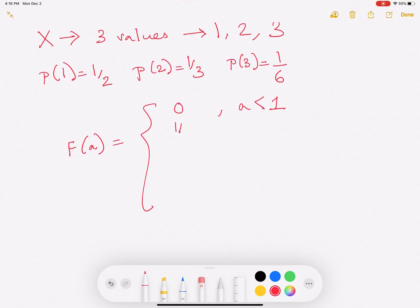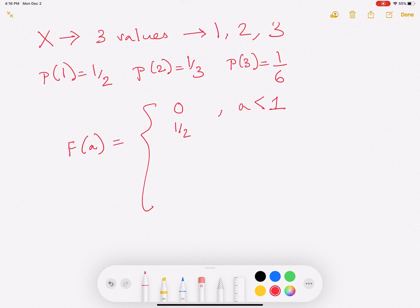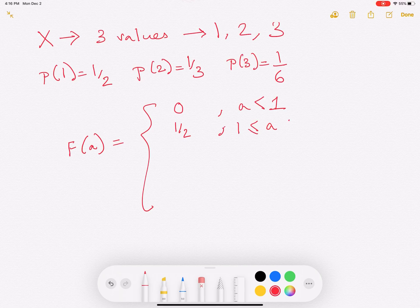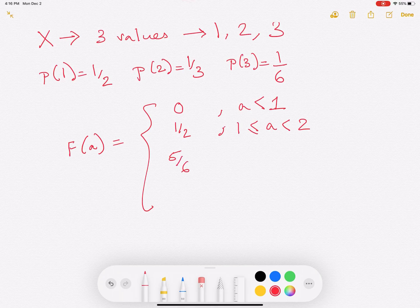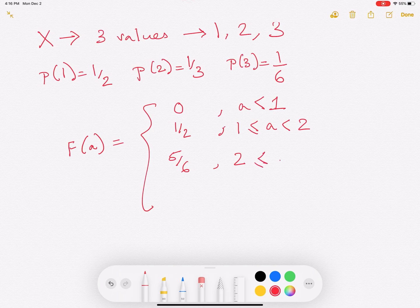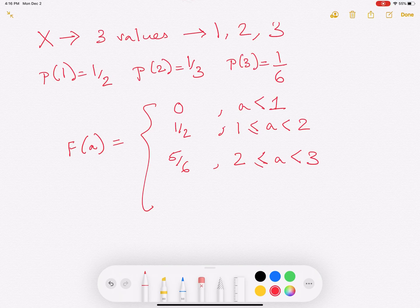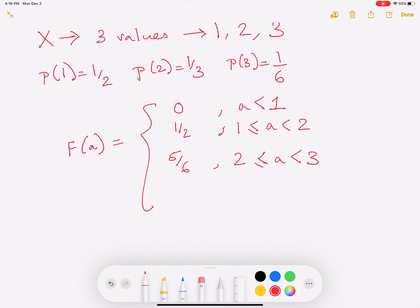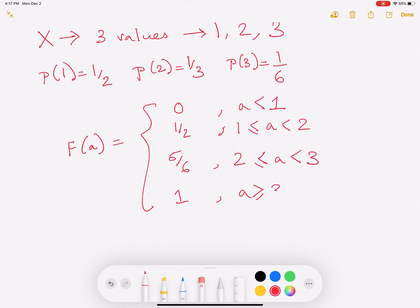It will be equal to half for A less than or equal to 1 and less than 2. It will be equal to 5 over 6 for 2 less than or equal to A less than 3. So A is greater than 2. So you're going to add P of 1 and P of 2.